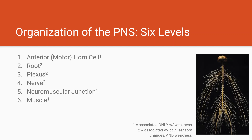Any disease that affects the peripheral nervous system affects one or multiple of these areas. The really important thing to understand that helps you narrow your differential is that the anterior horn cell, the neuromuscular junction, and the muscle present with weakness and only weakness. While associated pain and sensory changes are instead seen in diseases of the root, plexus, and nerve. By understanding this simple division you can basically cut your differential in half.